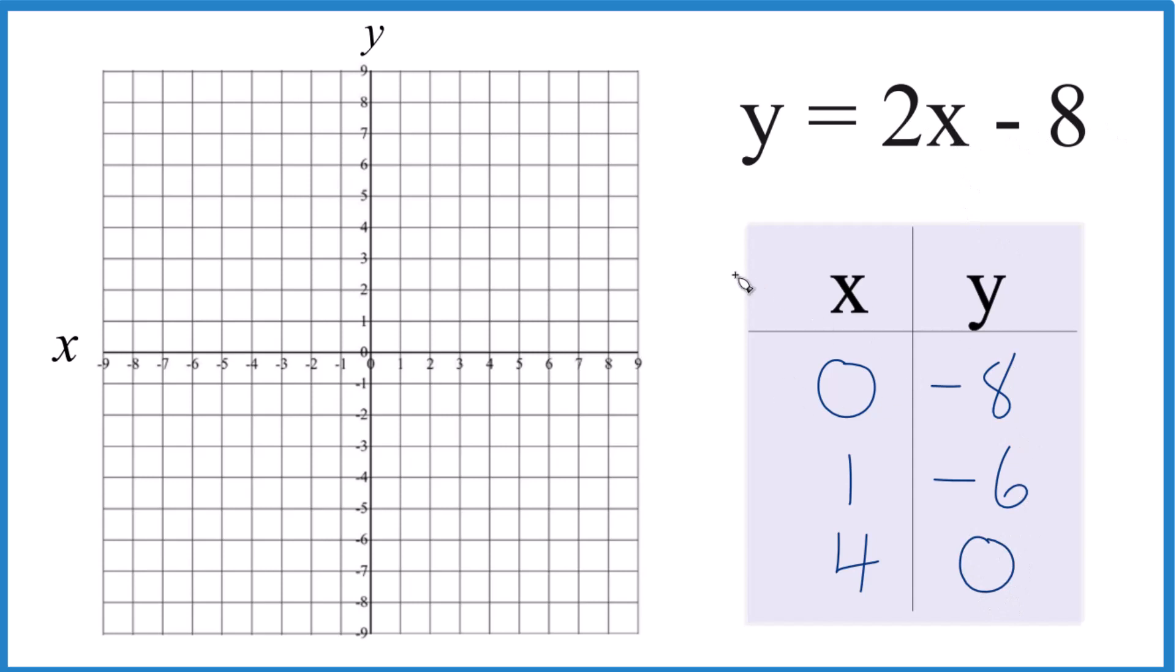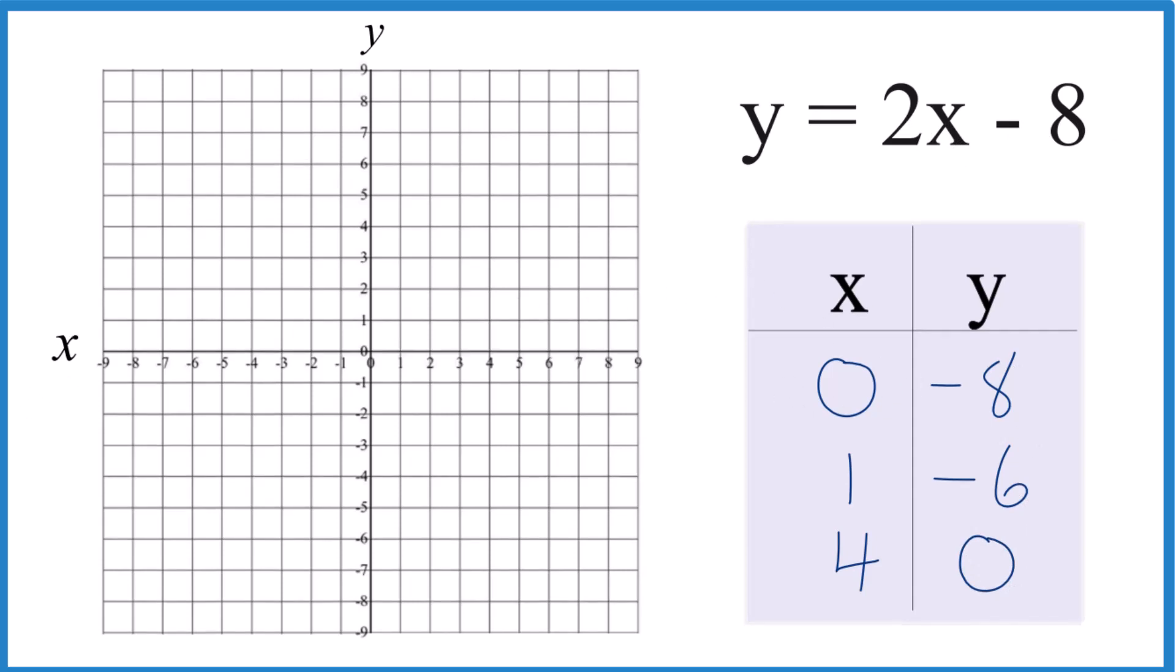So those are the points. Now we can just put them on our graph, and we should have our line. x is 0, y is negative 8. x is 1, y is negative 6. Right there.